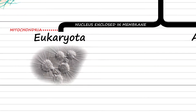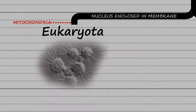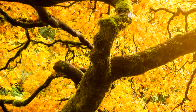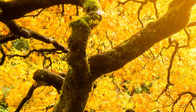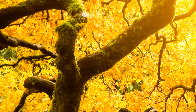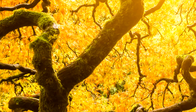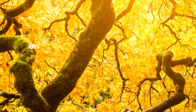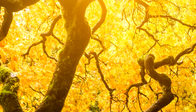Eukaryotes started off as single celled organisms but some would later evolve to become multicellular. And that's what we will see in the next episode, when we will take a look at the diversification of eukaryotes into plants, fungi and animals.